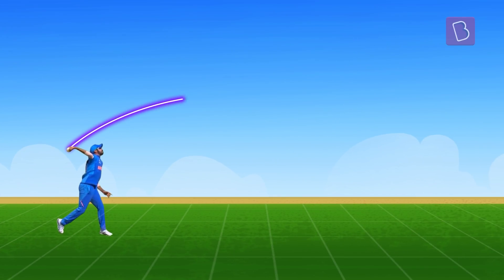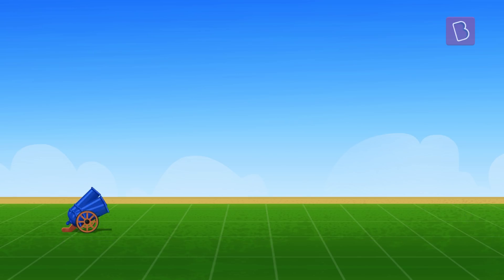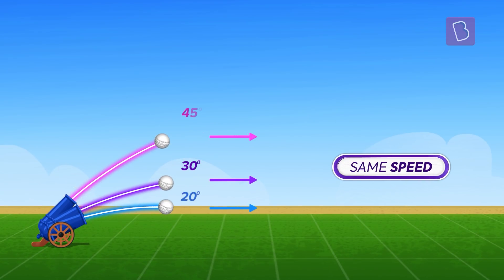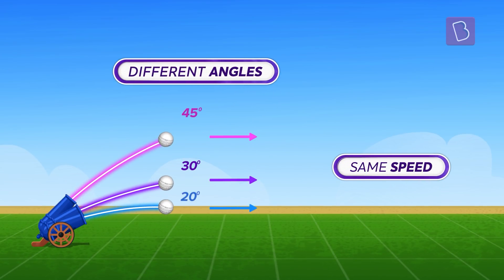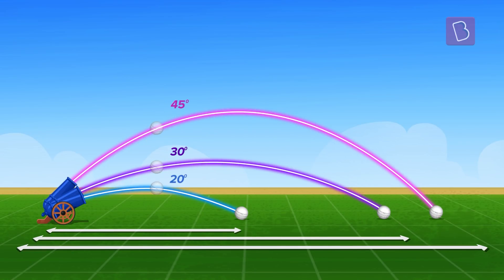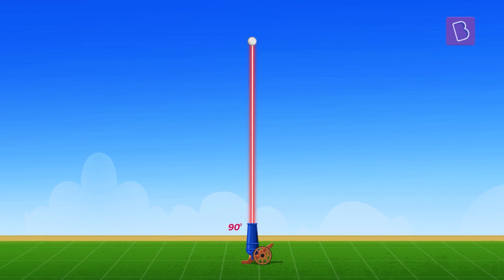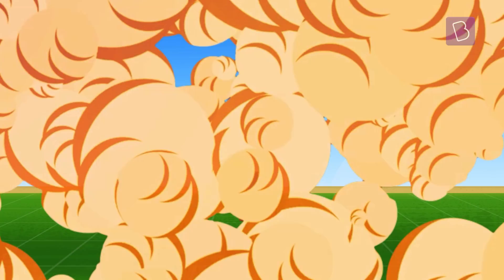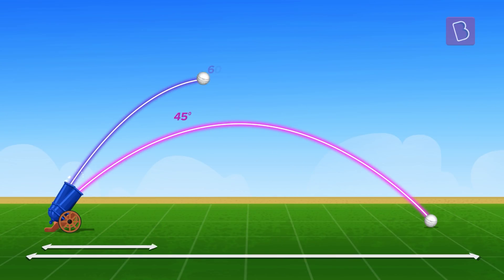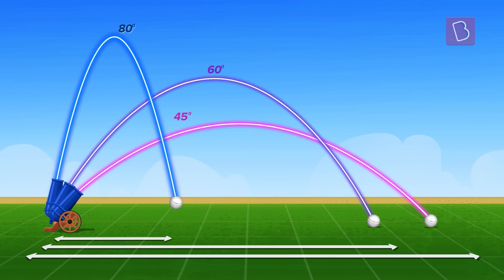The horizontal distance covered by a projectile is called its range. Notice the range as we launch cannonballs at the same speed but different angles. It appears that the range increases as the angle increases. In that case, the maximum range should be at 90 degrees, right? Clearly not. As the launch angle increases beyond 45 degrees, the range starts to decrease.